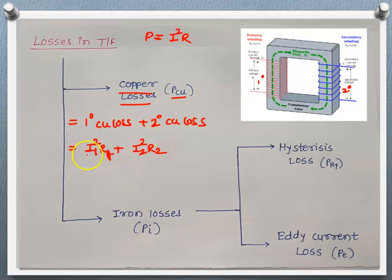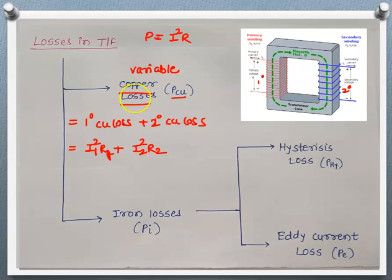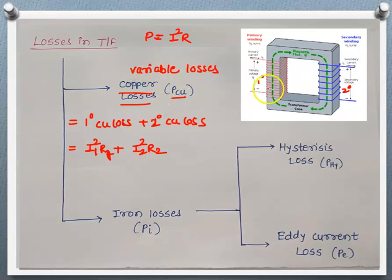Copper loss depends upon I1 and I2 values because R1 and R2 are constant, but I1 and I2 depend upon the load. As the load changes, this value changes. So copper loss is also known as variable losses because its value depends upon the load. To reduce copper losses, we prefer low winding resistance of the primary and secondary winding, so that the efficiency of the transformer will be better.